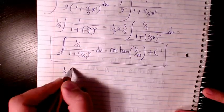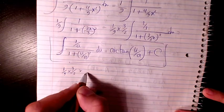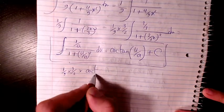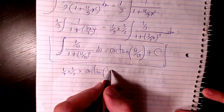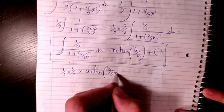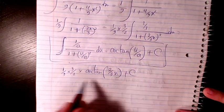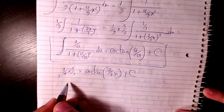2 over 3 x plus a constant value. These two cancel out. I will have 3, so it will be 1 over 6 arctan.